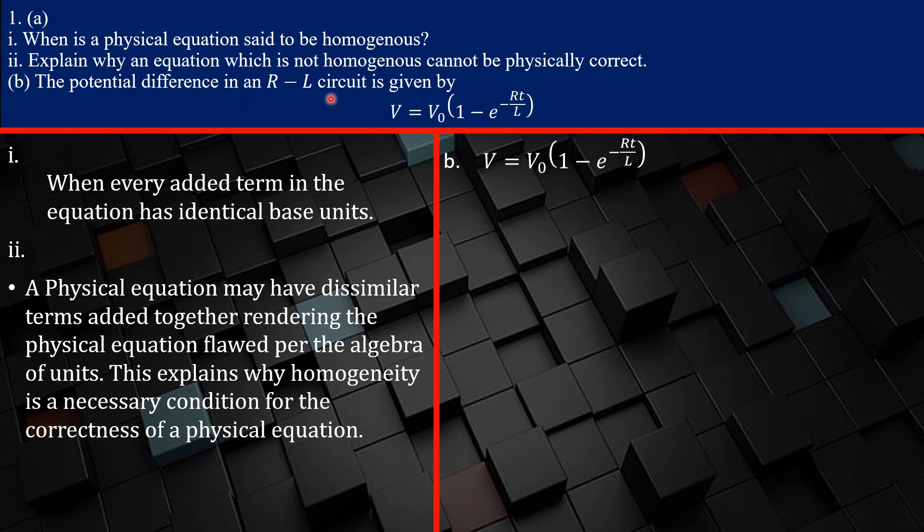They say the potential difference in an RL circuit is given by this equation. Show that this equation is homogeneous. Okay, they have defined for us what V, V naught, and the other terms are. So if you read the previous question, if you read the question in the previous part, you'll notice.